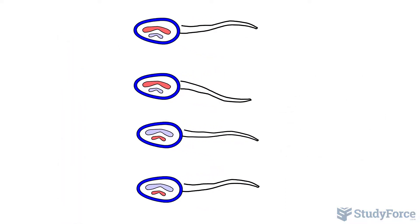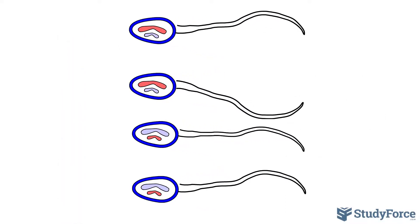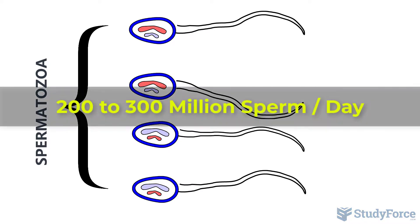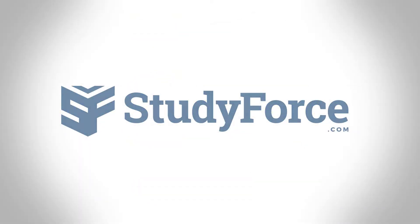Spermatids must go through a maturation process after they complete meiosis in order for them to become viable sperm, also known as spermatozoa. Sperm production occurs throughout the reproductive life of human males, and testes produce 200 to 300 million spermatozoa daily.